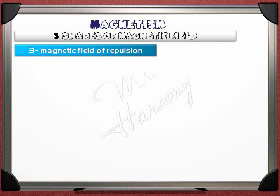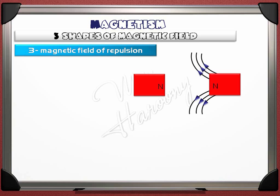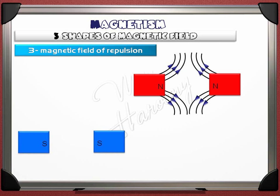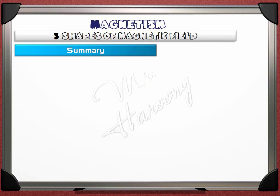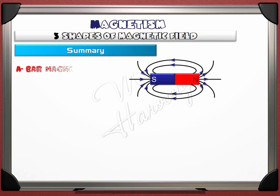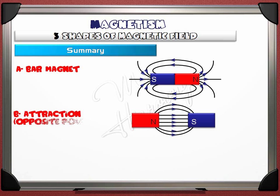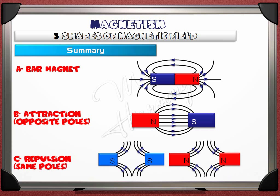The third magnetic field is that of repulsion, where two same poles are close to each other. The two poles may be two north poles, drawn as shown. If two south poles are opposite each other, the shape is the same but the arrows point into the poles, not out. Remember that magnetic flux lines always come out of the north and into the south. A summary: we studied the field of a bar magnet, the field of attraction between two opposite poles, and the field of repulsion between two same poles.